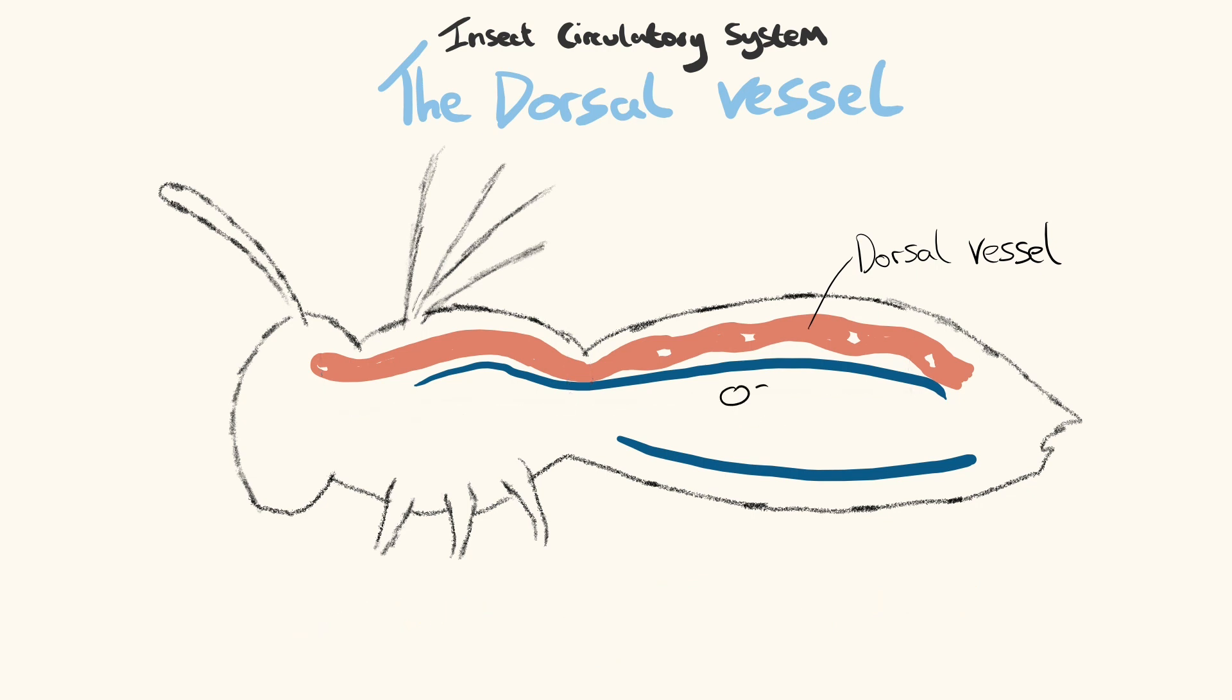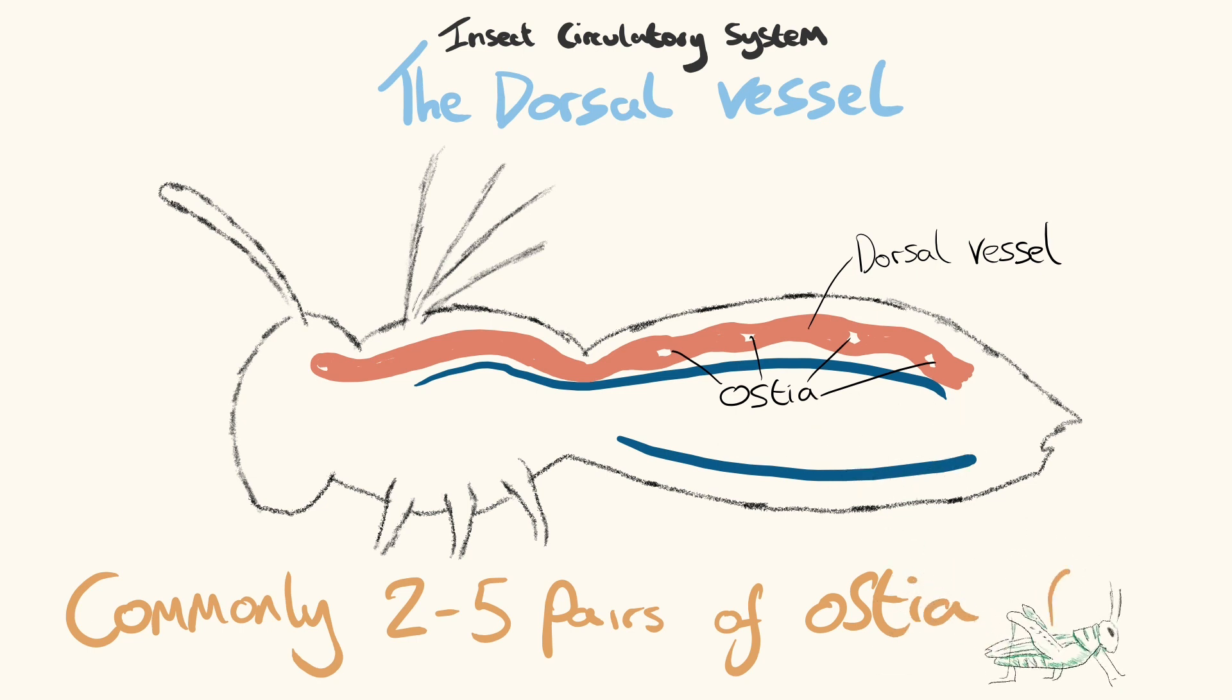Within the dorsal vessel are ostea, which are small openings that enable the entry of haemolymph into the dorsal vessel itself. Ostea are most commonly found in the posterior section and are normally paired laterally on either side of the vessel. Most insects possess between two to five pairs of ostea, but some orders such as Orthoptera can have up to twelve pairs.